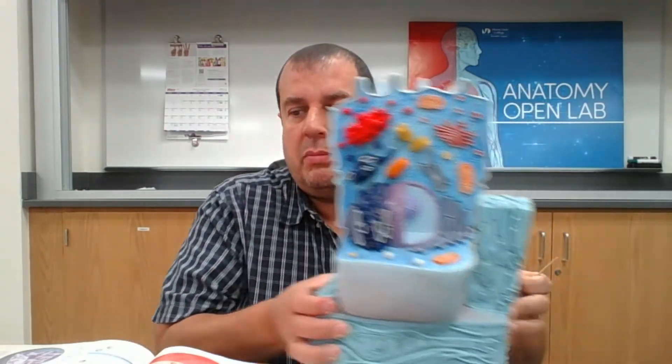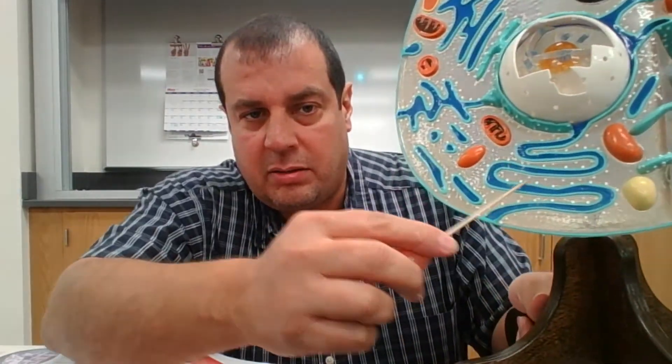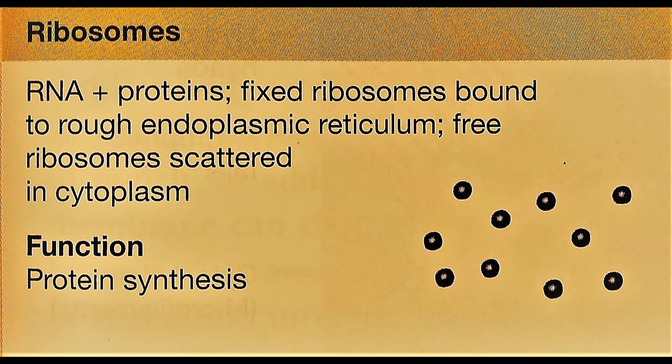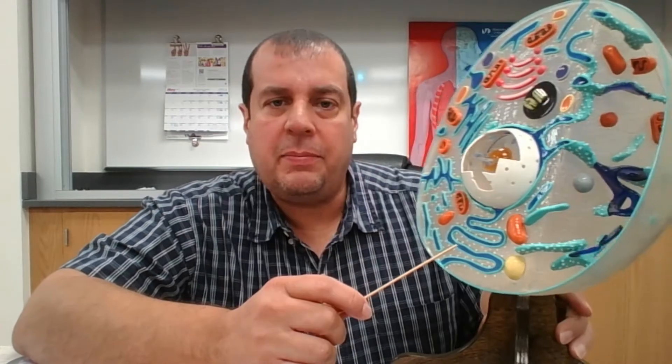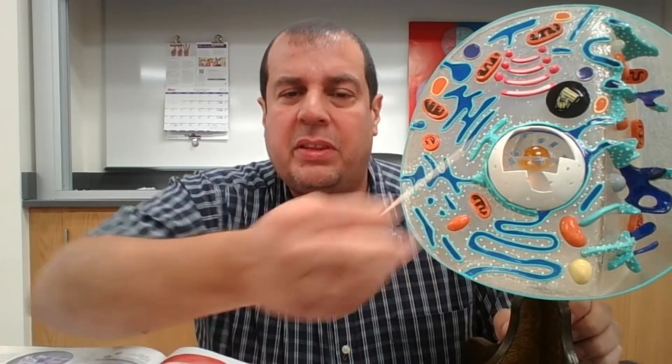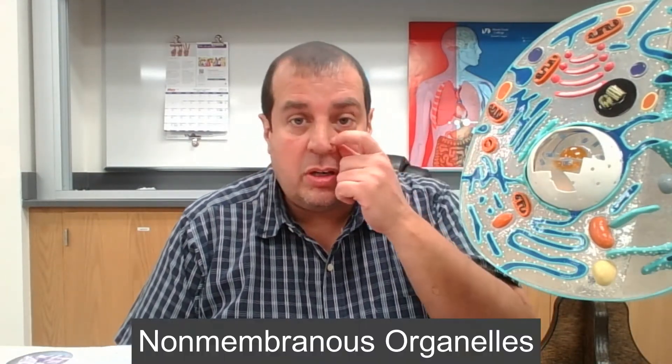Ribosomes are RNA plus proteins. Fixed ribosomes are bound to the rough endoplasmic reticulum, while free ribosomes are scattered in the cytoplasm. Their function is protein synthesis. Fixed ribosomes are attached to the channels, and free ribosomes float around in the cytosol not attached to anything, but they both produce proteins. Ribosomes are also a non-membranous organelle.